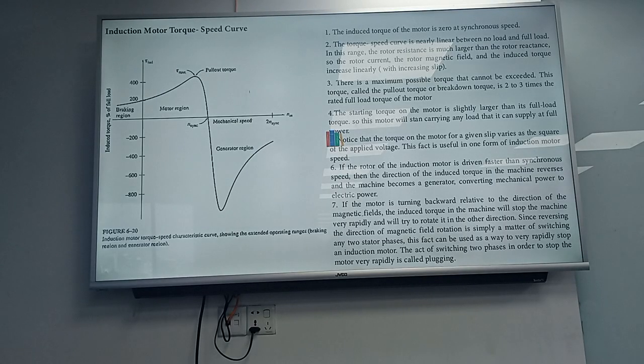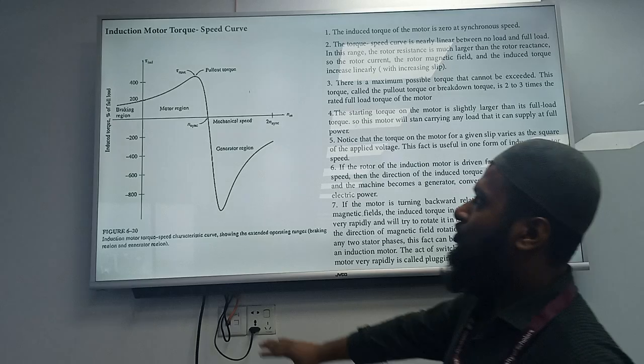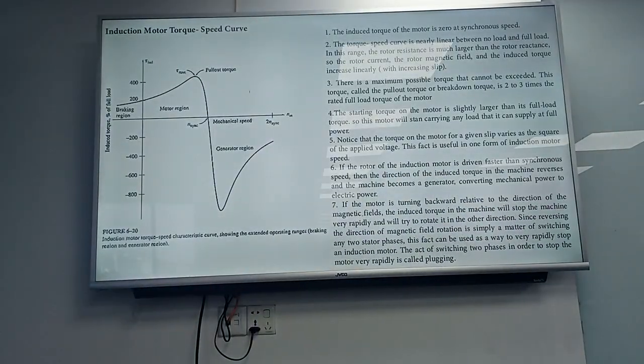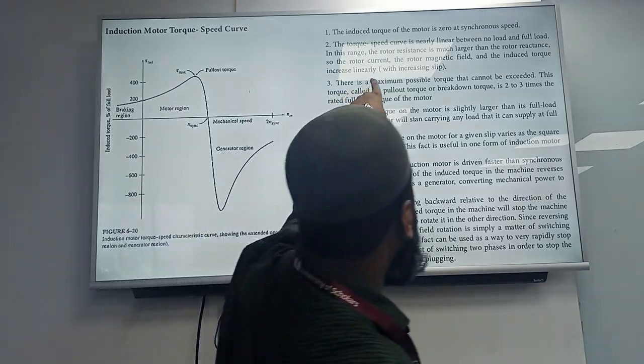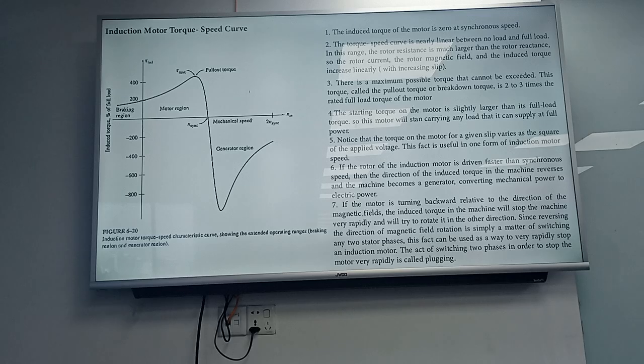Looking at the induction motor torque-speed curve, this is very important. You can see two regions - the motor region and the generator region. The motor condition shows that the induced torque of the motor is zero at synchronous speed. The slip S equals Ns minus Nm divided by Ns.